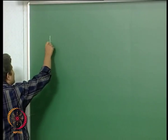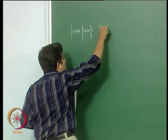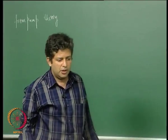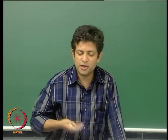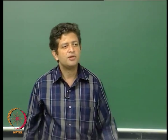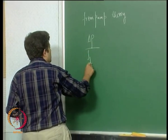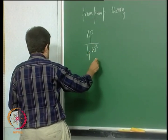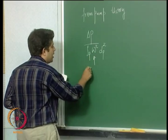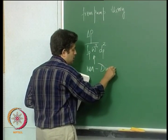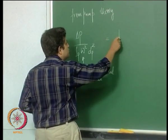Now from pump theory, it is a theory wherein you non-dimensionalize the head, and it is a function of rotational speed and impeller diameter. So it is written like this: delta P by — this is the non-dimensional head — and this is equal to a function of the non-dimensional parameters.